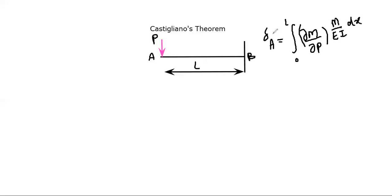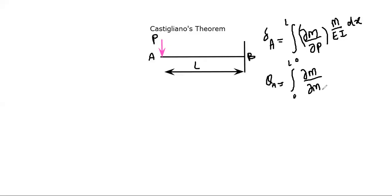Today what we have to use is the expression that the slope at A is equal to the integral from 0 to L of (del M / del MA) multiplied by (M / EI) dx. Here MA is the external bending moment applied at A. This is the formula from Castigliano's theorem.